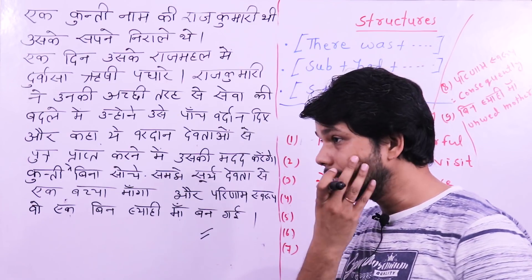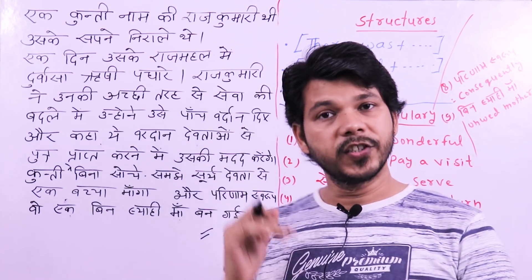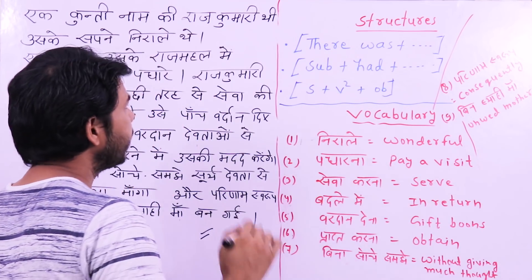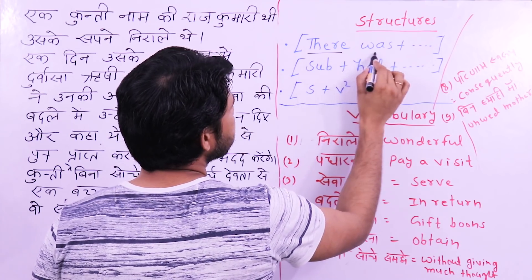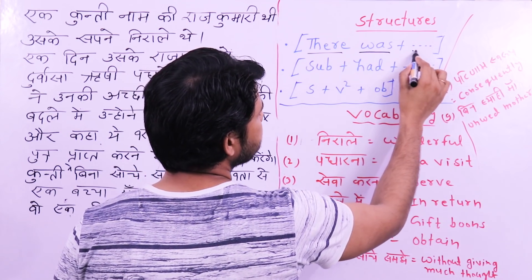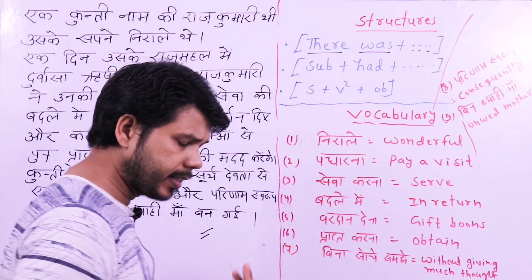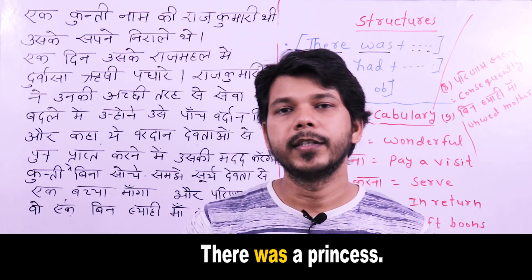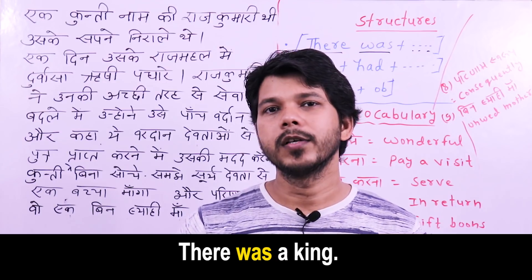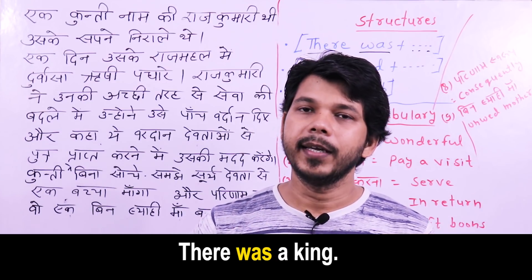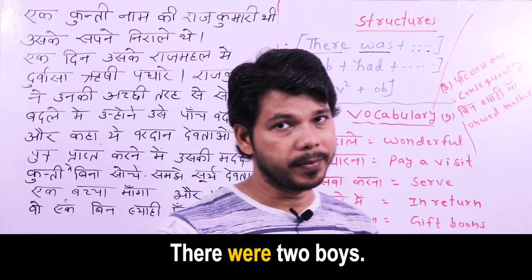So guys, we need to convert this into English. Let me explain the structures. One structure used here is 'there' — use 'was' with it and show whatever is there. If it's singular use 'was,' if more than one use 'were.' For example: एक राजकुमारी थी — there was a princess; एक राजा था — there was a king; दो लड़के थे — there were two boys. So you will use this 'there' formula here.